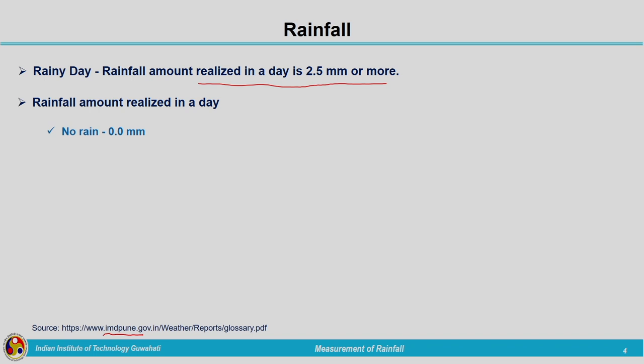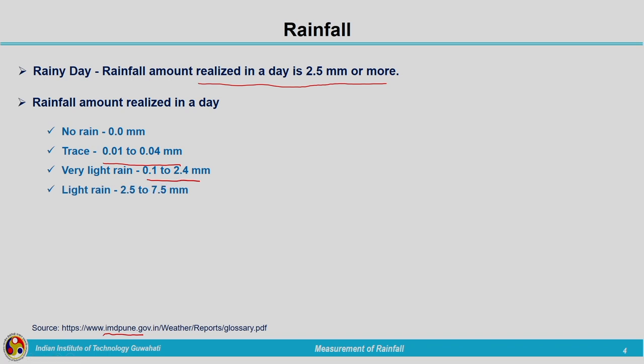The IMD rainfall classification is as follows. Zero rain means no rain — not a rainy day. Trace is rainfall between 0.01 to 0.04 millimeters; it is a very small, not measurable amount. Very light rain ranges from 0.1 to 2.4 millimeters. Light rain is rainfall depth of 2.5 to 7.5 millimeters in a day — if the rainfall in a day is between 2.5 and 7.5 millimeters, we call it light rain.